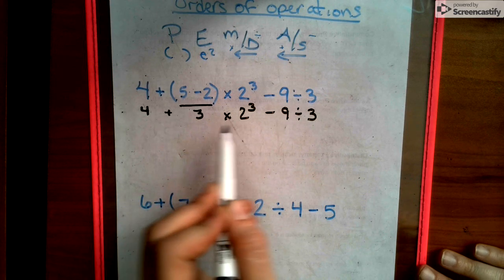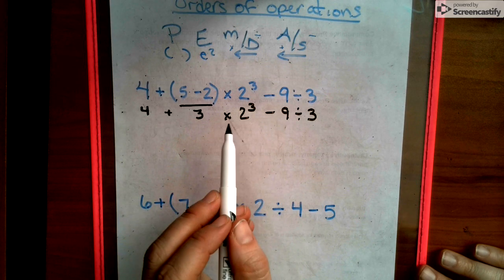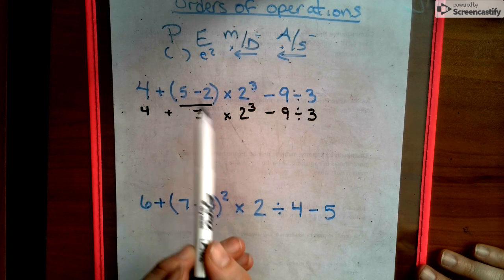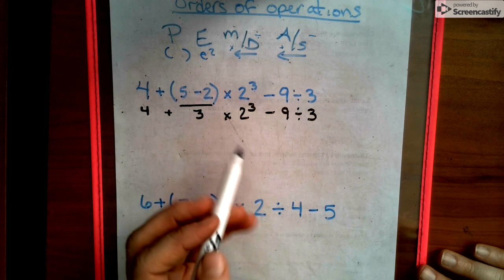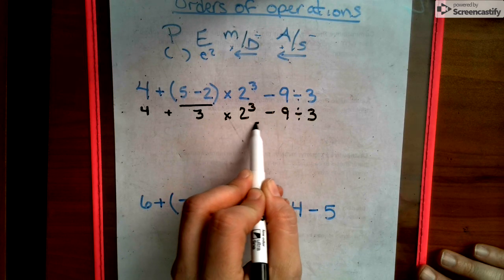So then we ask ourselves, are there more parentheses? And then we say no. So P is done. So now we look at E. Are there any exponents? And yes, exponents.